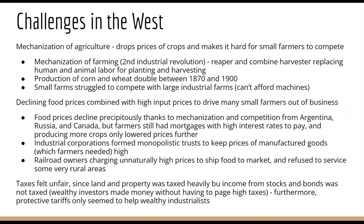So manufactured goods were expensive, but the prices were dropping for the things farmers were selling. On top of this, railroad owners charged unnaturally high prices to ship food to market and even refused to service some of the very rural areas. Even where there was service, railroad owners banded together and agreed to charge very high prices to transport food to market. The taxes also felt very unfair because land and property was taxed really heavily, but income from stocks and bonds that wealthier people might have was not taxed as income.